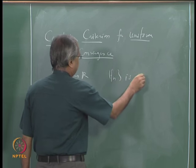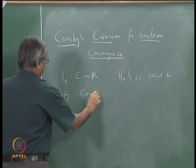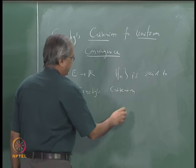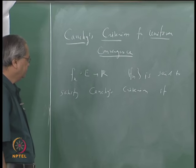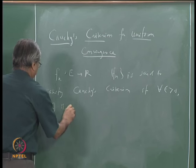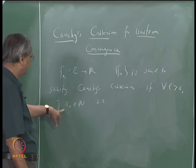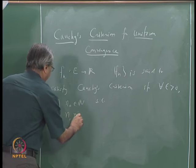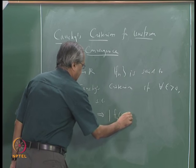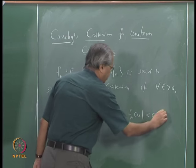f_n is said to satisfy Cauchy's criteria if for every epsilon greater than 0, there exists N_0 in the natural numbers such that for all n and m greater than or equal to N_0, the absolute value of f_n(x) minus f_m(x) is less than epsilon, and this should hold for every x in E.